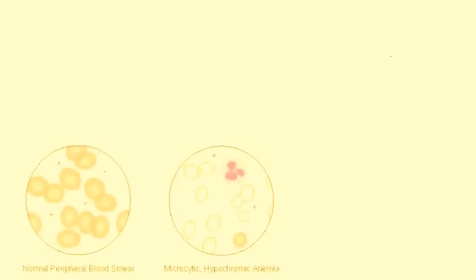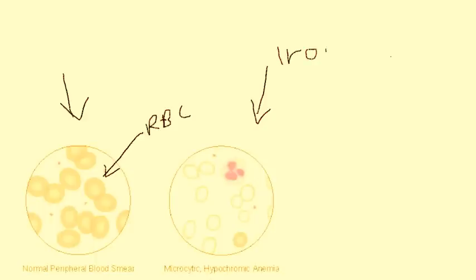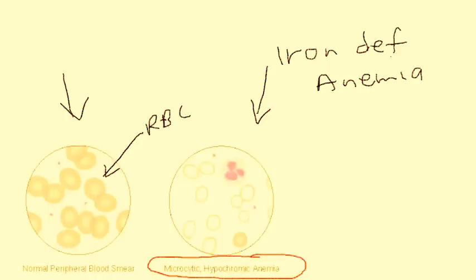Here is a normal peripheral blood smear showing normal RBCs. And this is a peripheral blood smear of iron deficiency anemia. The key terminology you'll see on licensing exams is microcytic hypochromic. Microcytic refers to size — the cells are smaller, as you can clearly see. Hypochromic — 'hypo' means low, 'chromic' refers to color — the color is paler, and you can clearly see they're not as colorful.